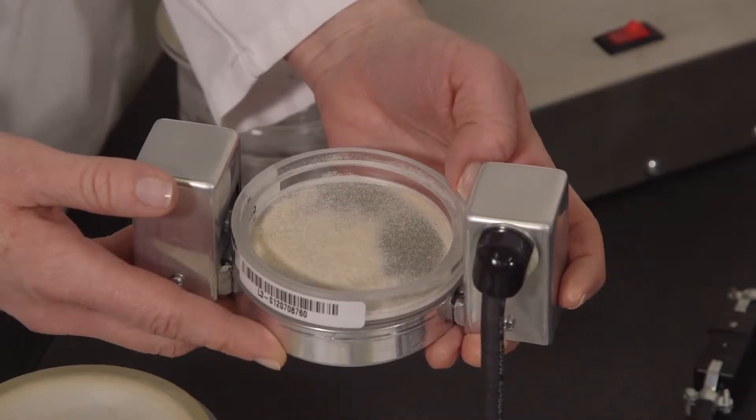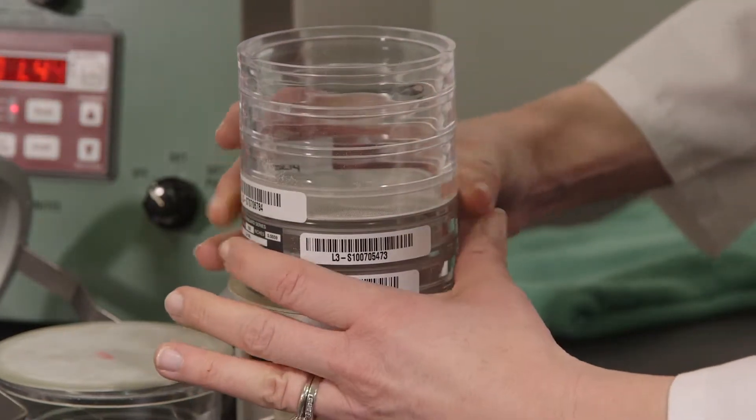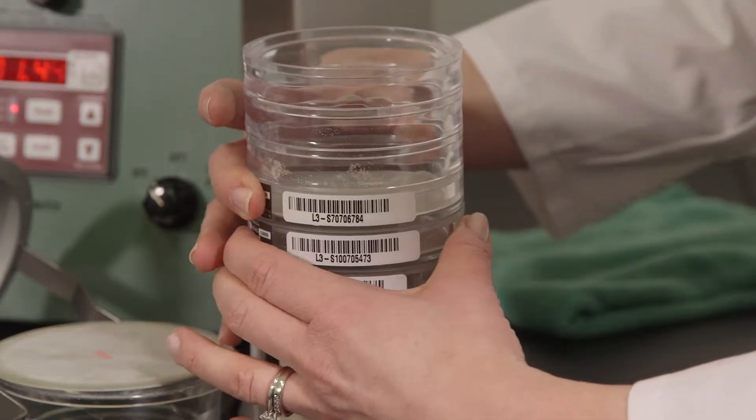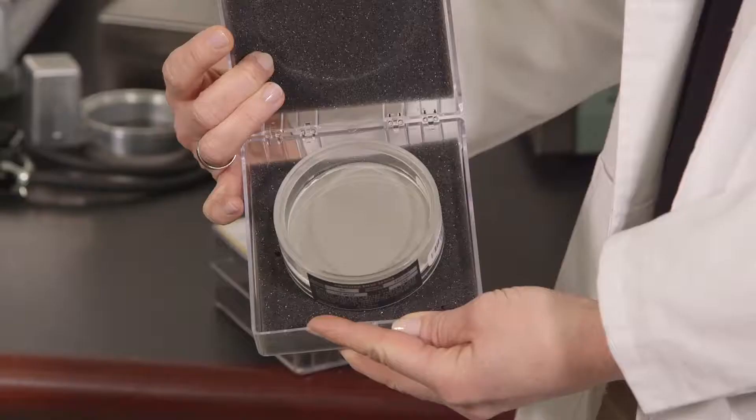When working with samples finer than 45 microns, you may find the addition of the L3N8 horizontal pulse accessory helpful in reducing agglomeration. This accessory is placed at the very bottom of the stack, on top of the fines collector, and will impart a horizontal tap to alternating sides of the stack.